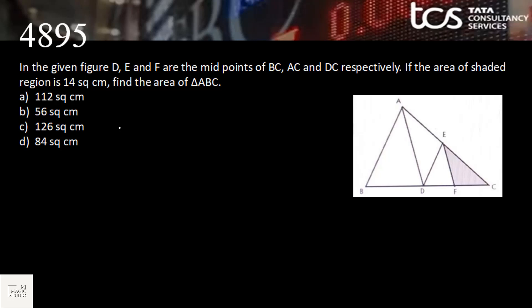The first one on the screen: in the given figure, D, E, F are midpoints of BC, AC, and DC respectively. If the area of the shaded region — that means triangle EFC — is 14 square centimeters, what is the area of triangle ABC?